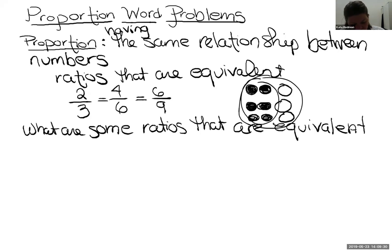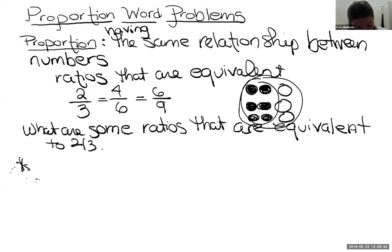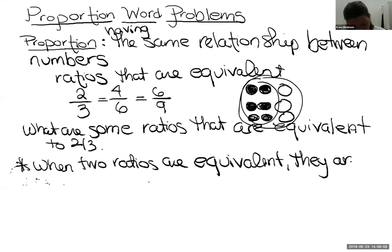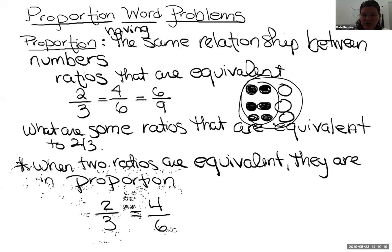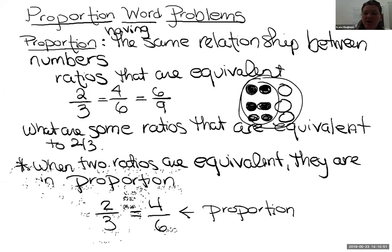So ratios equivalent to two thirds include four sixths and six ninths. When two ratios are equivalent, they are in proportion. Two equal ratios — two equal fractions — make a proportion. This is important: when two ratios are equivalent, they are in proportion. I would rather just say: look at that, that is a proportion. Why? It's two equal ratios. What I want to discuss today is what we can do when we don't know one of the numbers in a proportion.